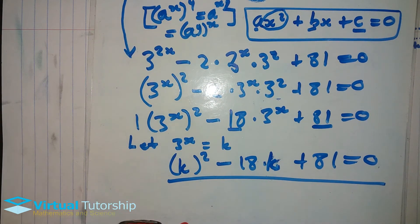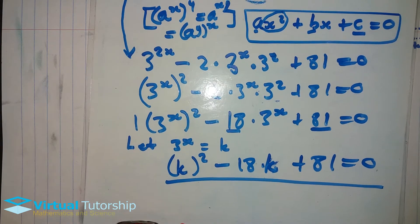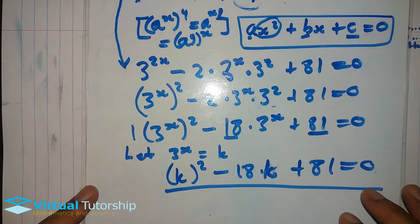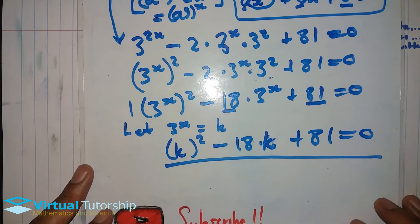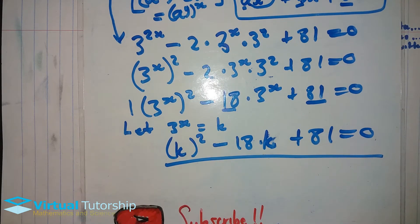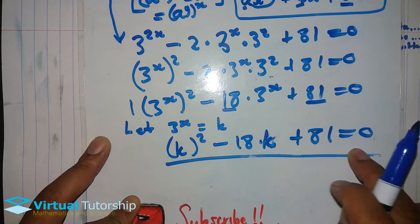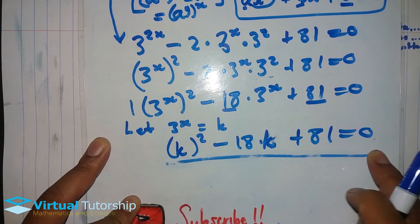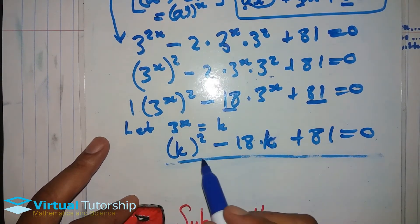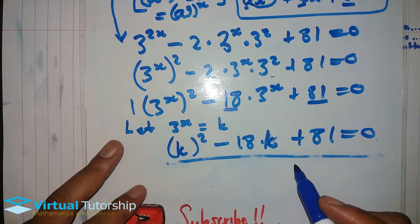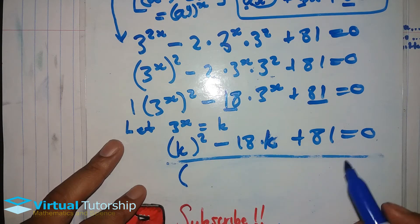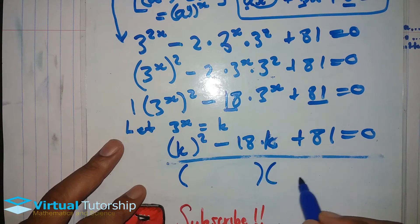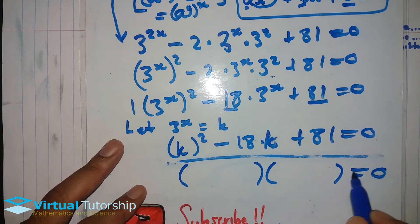So we end up in a quadratic equation. From here, you find the factors using the factoring method or any other method that you prefer when solving the quadratic equation.